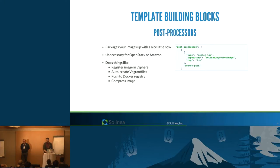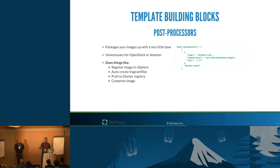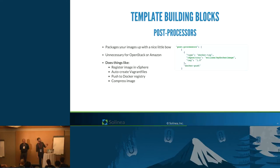The third building block is the post-processor. After your image bake is complete, what do you do with it? For OpenStack or Amazon, there's nothing needed — the builder handles it. But for VMware baking, you can register your image in vSphere. With the VirtualBox builder, you can create Vagrant files. And for Docker, you can tag the image with a version number and push it to Docker Hub or a private registry hosted internally.